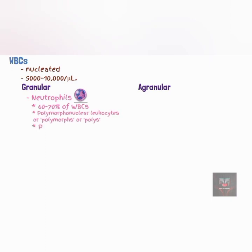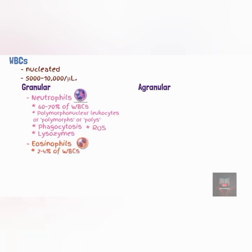The functions of neutrophils include phagocytosis and destruction of bacteria with lysozyme, defensins, and strong oxidants such as superoxide anion, hydrogen peroxide, and hypochlorite anion, referred to as reactive oxygen species. The eosinophils make up about 2 to 4% of the white blood cells in the blood. They usually have 2 lobes and play an important role in allergic reactions.